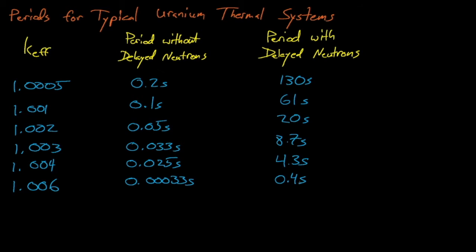This table shows how the period of a multiplying system changes as a function of the eigenvalue both with or without delayed neutrons. This period is again the time it takes for the neutron's power to increase by a factor of e. We see that delayed neutrons dramatically slow down a system's power increase to the point where we can actually control nuclear reactors fairly easy during supercritical transients.